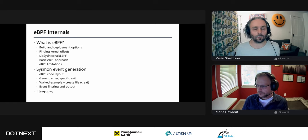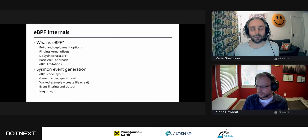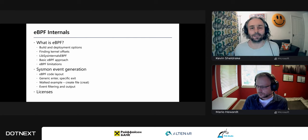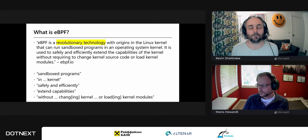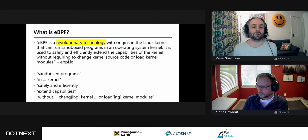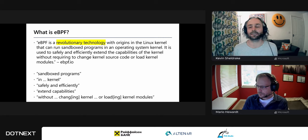I'll talk about eBPF in general, how we use it in Sysmon, and briefly about licenses. According to ebpf.io, eBPF is a revolutionary technology with origins in the Linux kernel that can run sandboxed programs in an operating system kernel. It is used to safely and efficiently extend the capabilities of the kernel without requiring changes to kernel source or loading kernel modules.